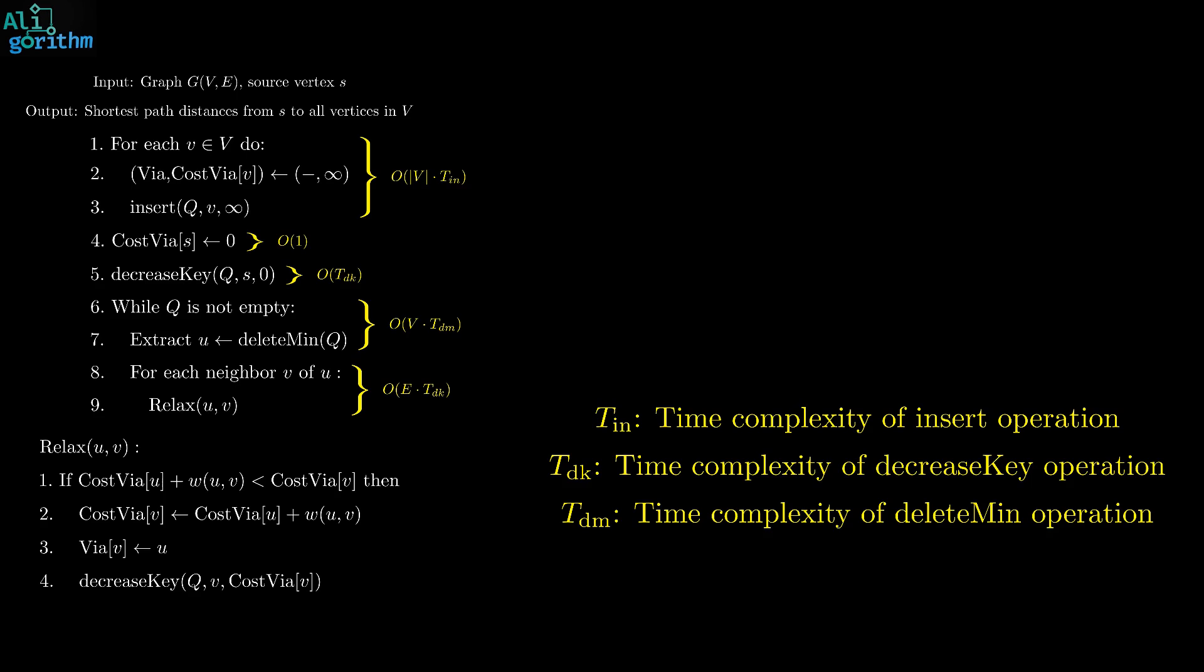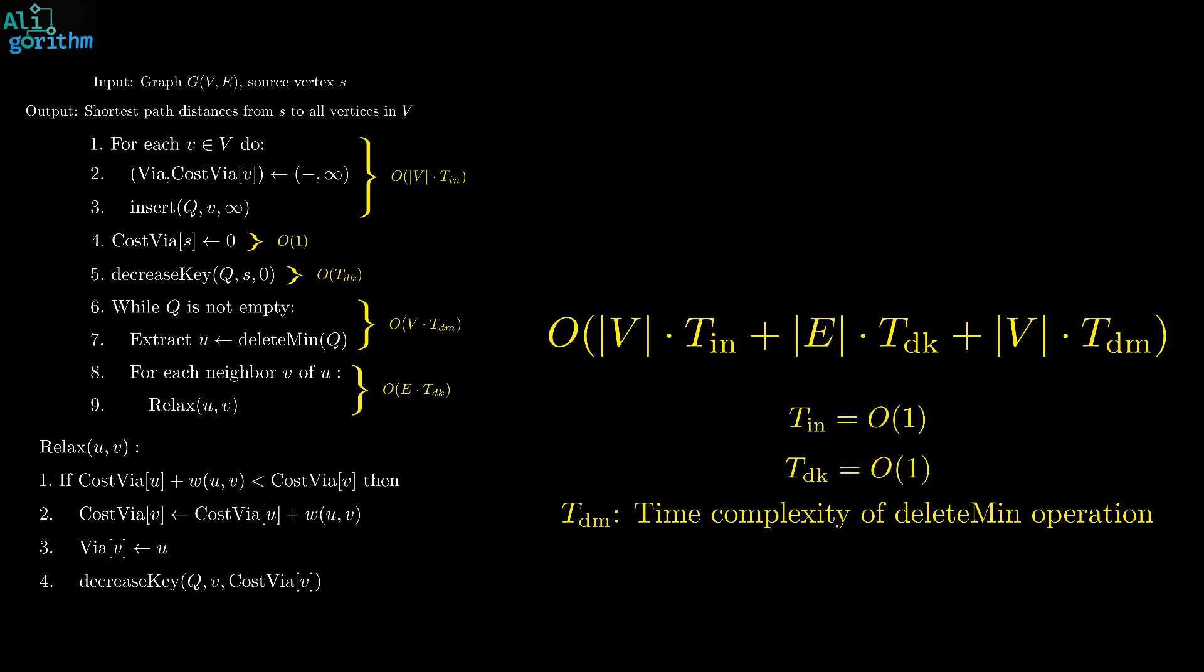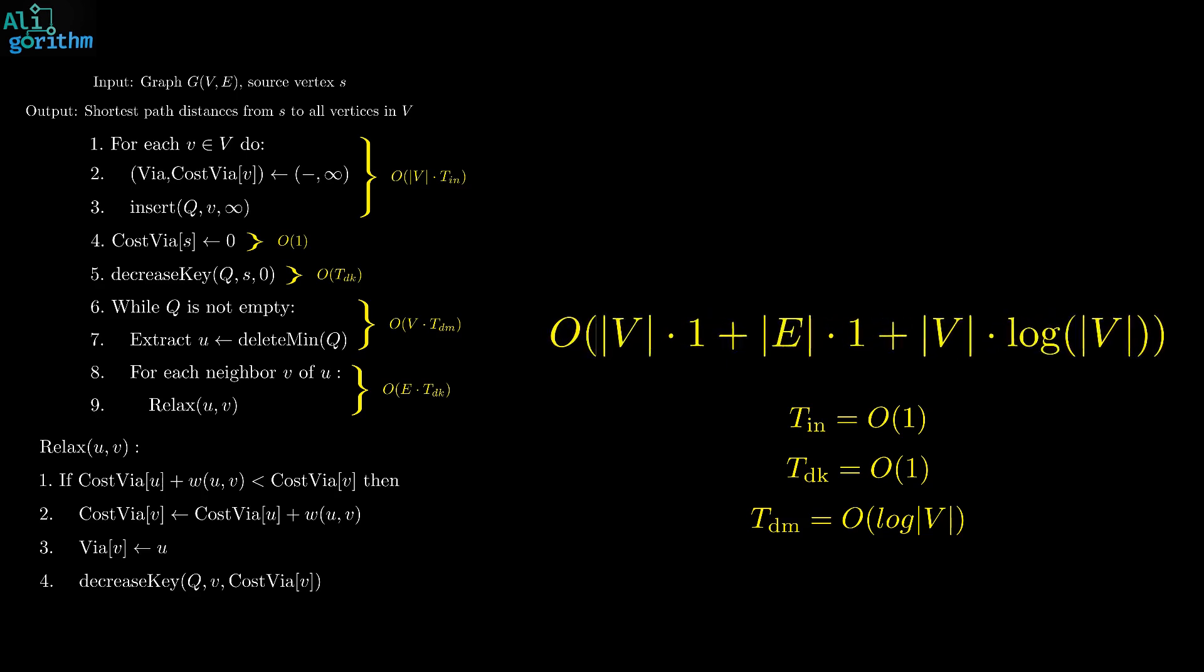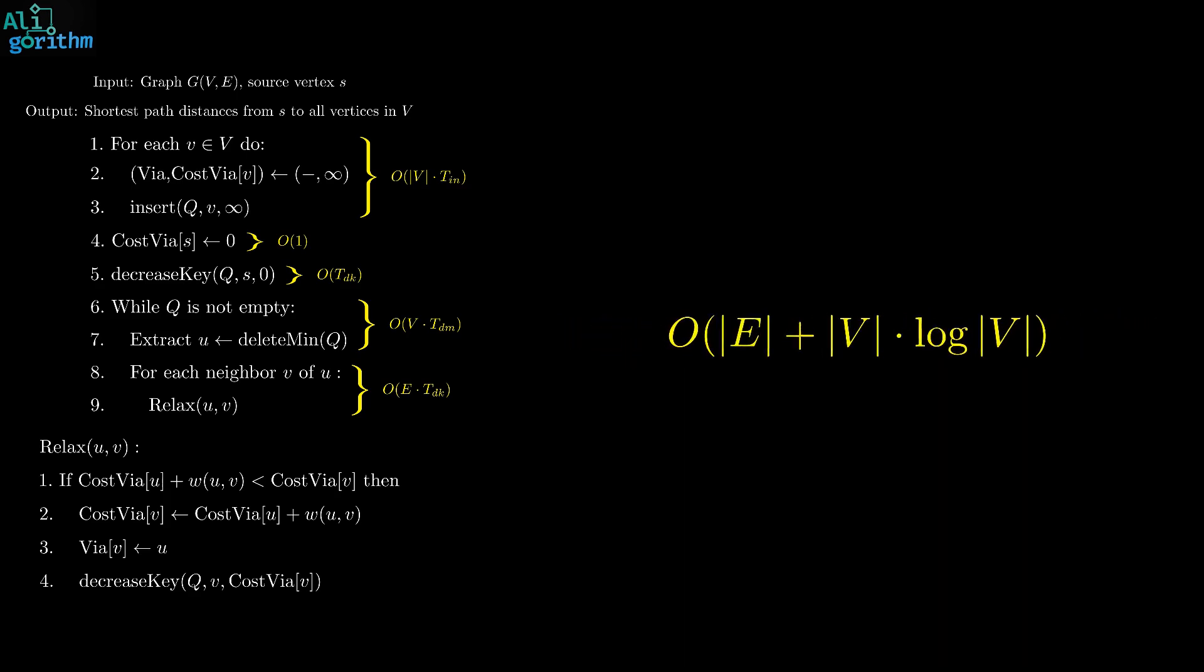So, the overall complexity of the algorithm is O of V times Tin, plus E times Tdk, plus V times Tdm. Using a suitable heap like a Fibonacci heap, for instance, we can get the following operation complexities. The insert Tin in big O of 1, decrease key Tdk in constant time, and the delete min Tdm with big O of log V. So, the total time complexity of Dijkstra's algorithm using this heap would become big O of E plus V log V.